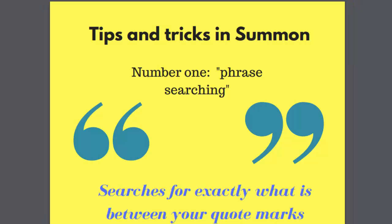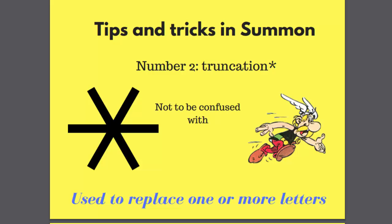There are some tips and tricks which can help you when searching Summon and databases. The first is phrase searching — simply putting double quote marks around the phrase you want to search on ensures that all results contain the exact phrase, not just the two words in separate locations. This really increases the relevance level of your search results. Truncation is another really useful feature of most databases and search engines. This allows you to search on the stem of a word by adding a character to the stem, usually an asterisk, which is what Summon uses.